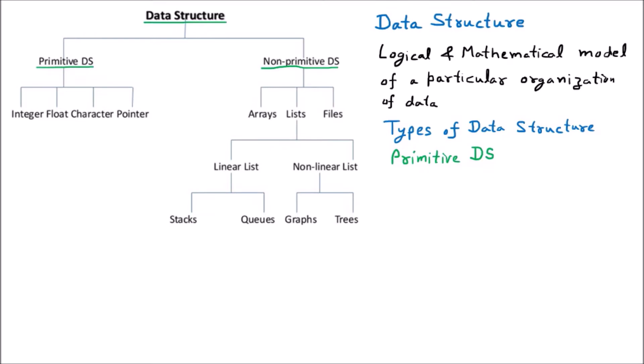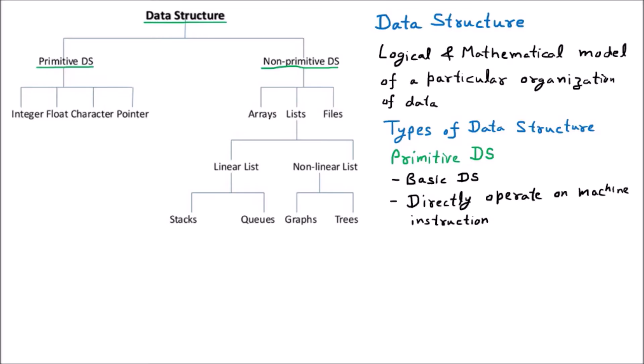Talking about the primitive data structure, it is the very basic data structure which is available. That means machine instructions can directly work upon it, and it is very much difficult for representation on different computers — meaning if the computer is different, it will give you a different representation. It is the basic structure and it directly operates on machine instruction, just like zeros and ones which directly work on the machine.